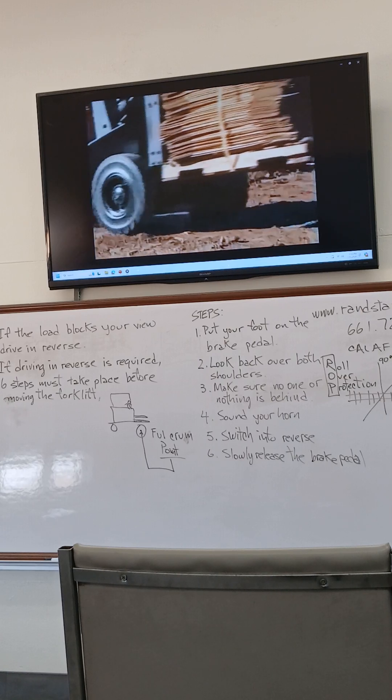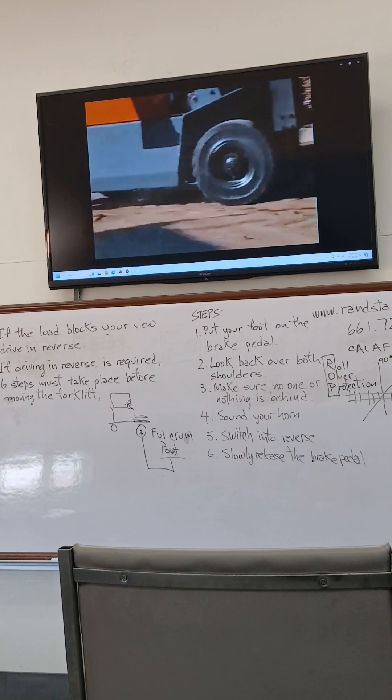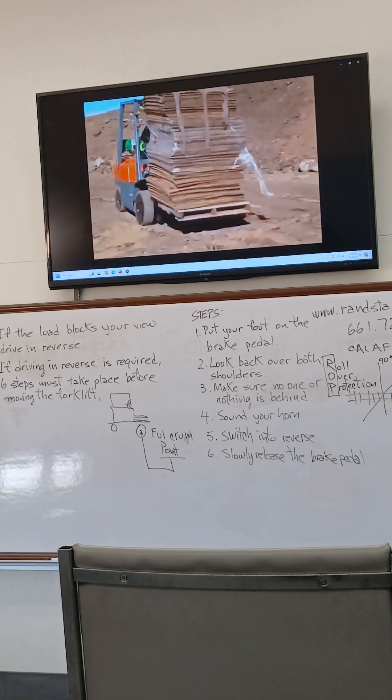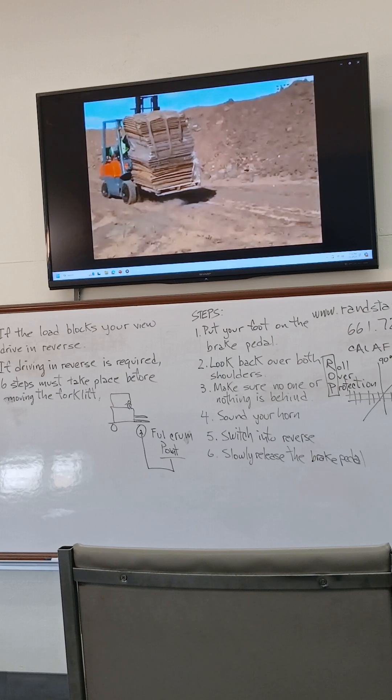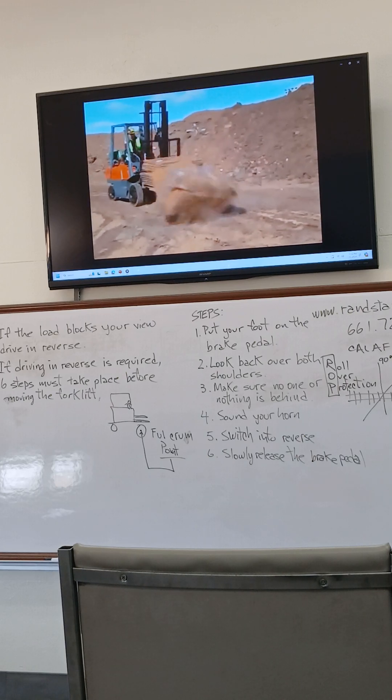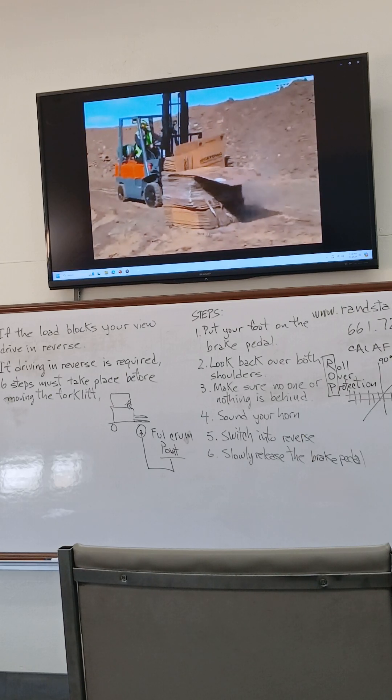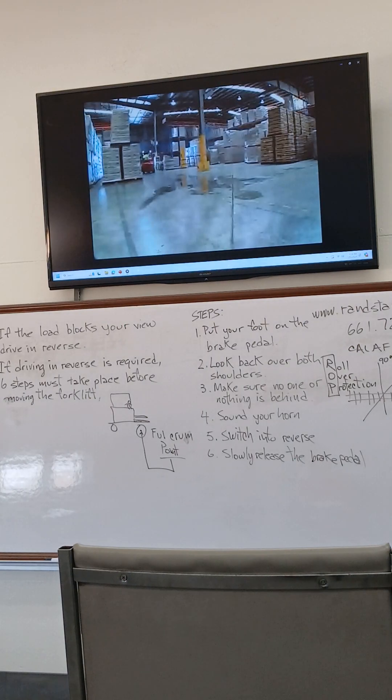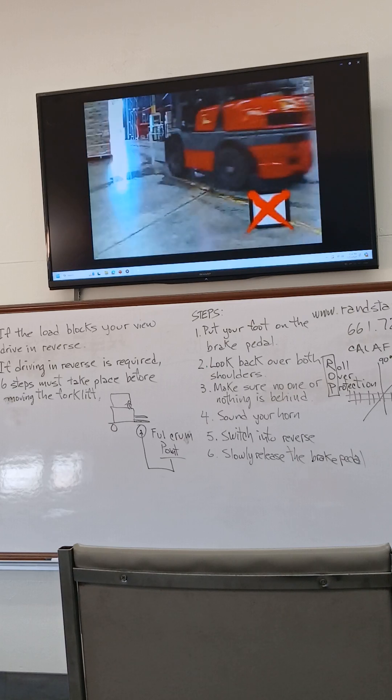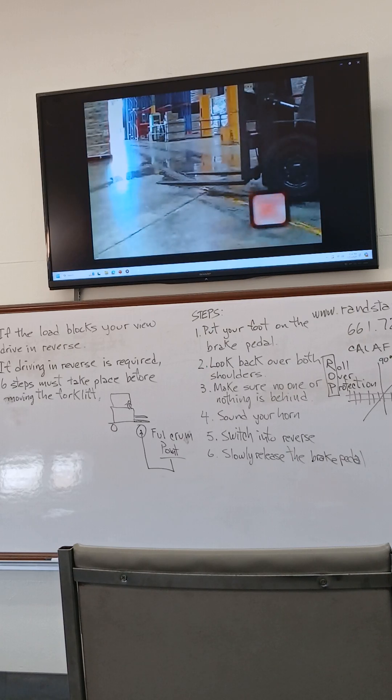Any surface a forklift drives on must be able to support the weight of a forklift and its load. A soft dirt surface can cause a wheel to sink and destabilize an elevated load and the forklift. Only specially designed forklifts are to be used on unsealed surfaces. Wet, oily, or icy surfaces should be avoided. Clean them up as soon as possible.